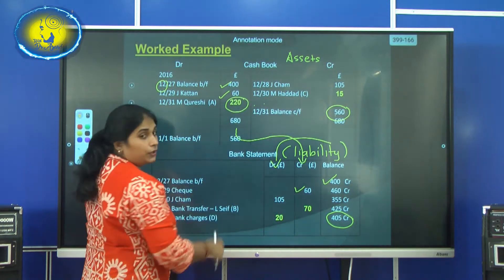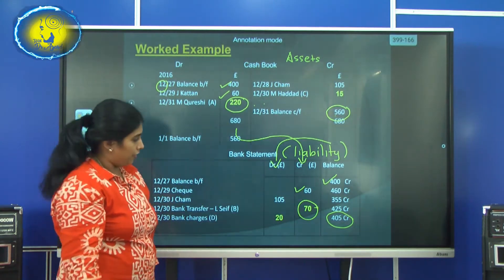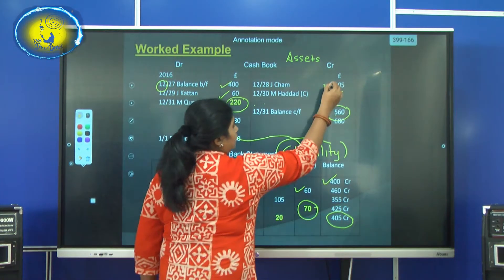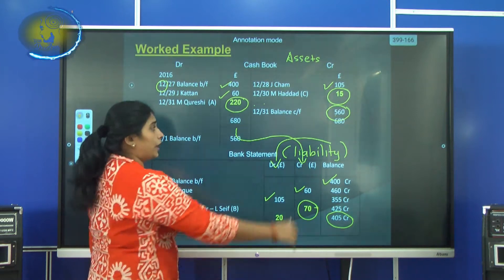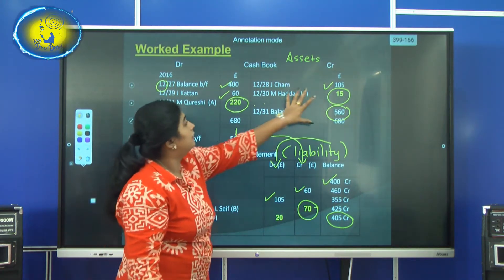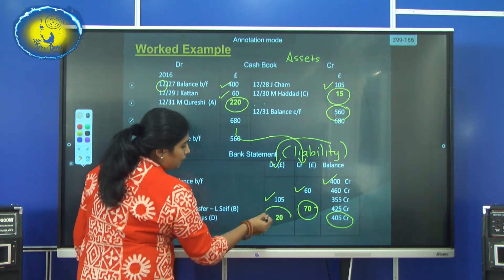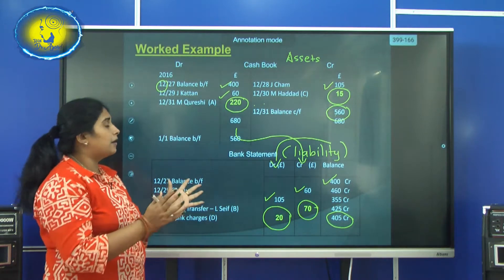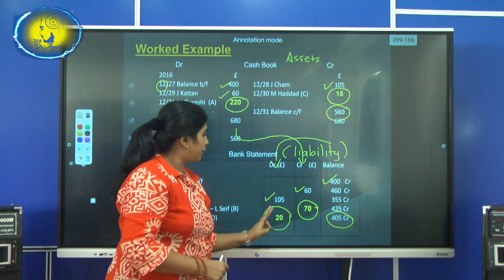When you compare the credit side with the debit side, you will see there is an amount that has not been recorded in the cash book — you can circle it. Comparing further: 105 is already recorded. Then you will see 15 has not been recorded in the debit column, so circle it. Continuing, when you compare the credit side with the debit column, you will find a difference of 20, highlighted in yellow. So we found four reasons which make the difference.